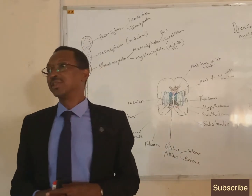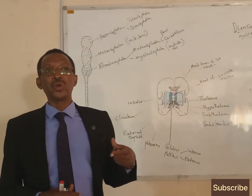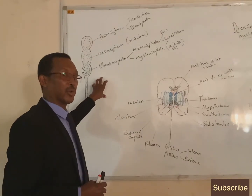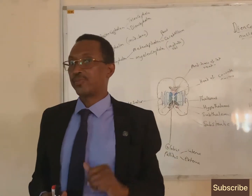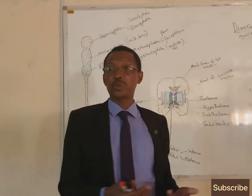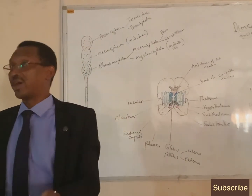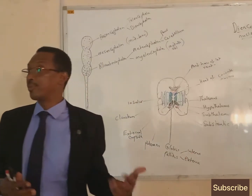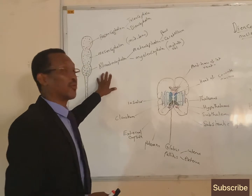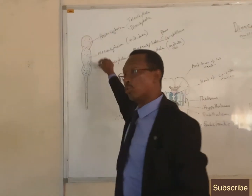Before discussing the intracerebral nuclei, let me recapitulate the embryonic neural tube. The nervous system started developing earlier than any other system because of its own importance and significance. The entire nervous system developed from ectoderm. We have three basic germ layers: ectoderm, mesoderm, and endoderm. The nervous system in general developed from ectoderm, from the neural plate and neural groove.